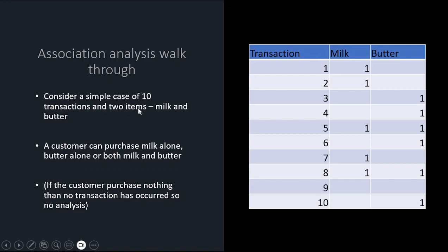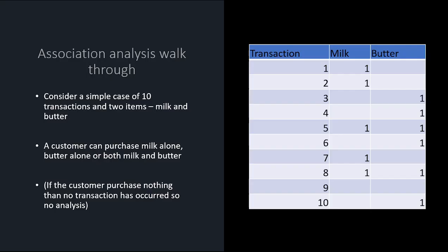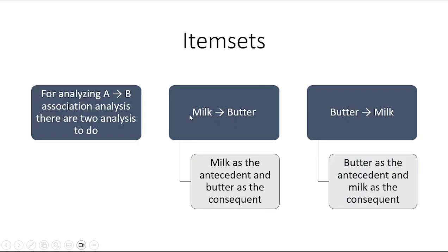Here are the one-item item sets: milk and butter. If they purchase milk alone, that's not A to B. If they purchase butter alone, that's not A to B. They can only be associated when purchasing milk and butter together. So A is milk and B is butter, or A is butter and B is milk — it doesn't matter. There are two ways to look at the analysis.